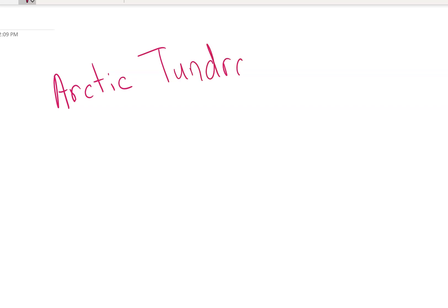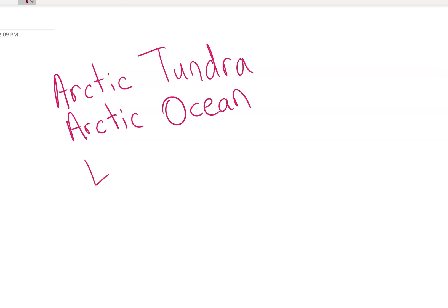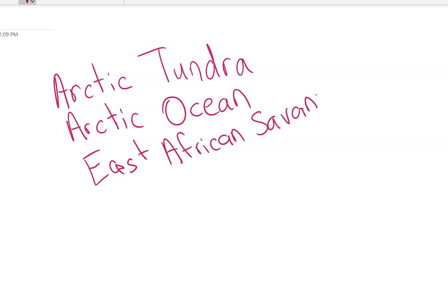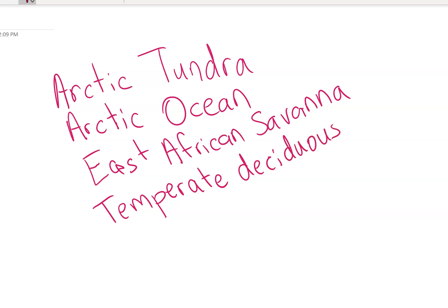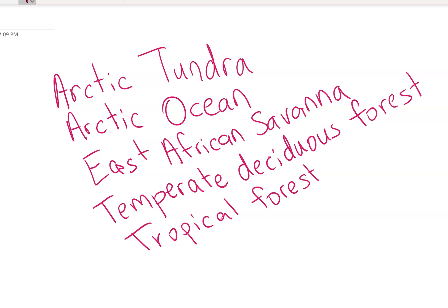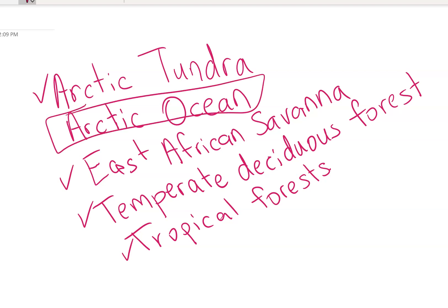So first we learned about the Arctic tundra and the Arctic Ocean. Then we learned about the East African Savannah. We learned about temperate deciduous forests, and last we learned about tropical forests. If we think about all of these habitats, all of them that I'm putting a check next to are land habitats, and we only learned about one habitat that was a water habitat.